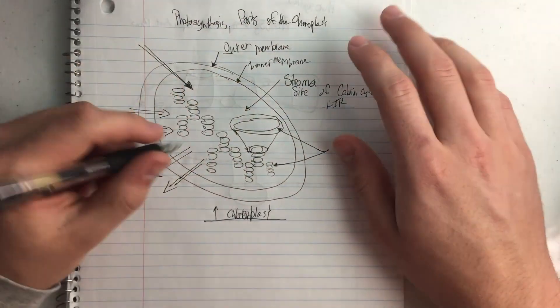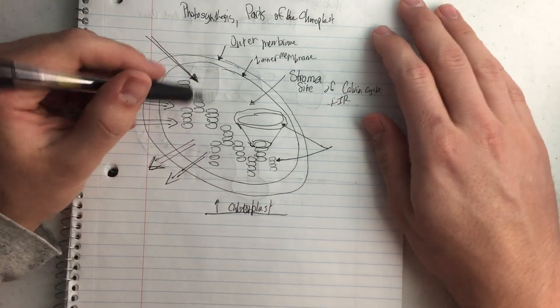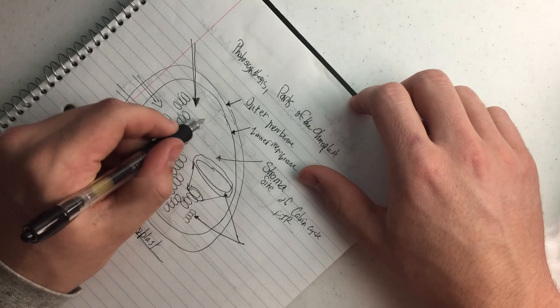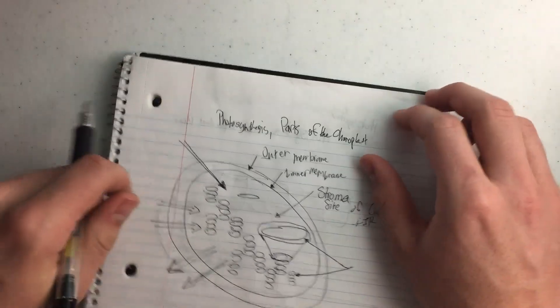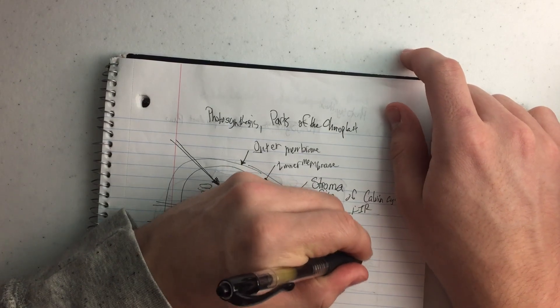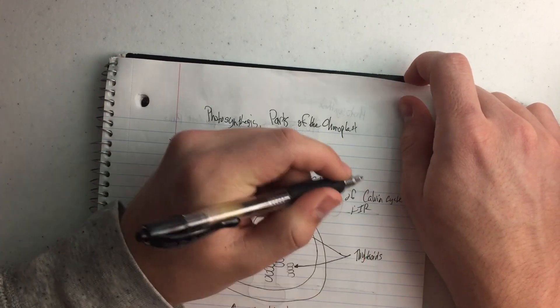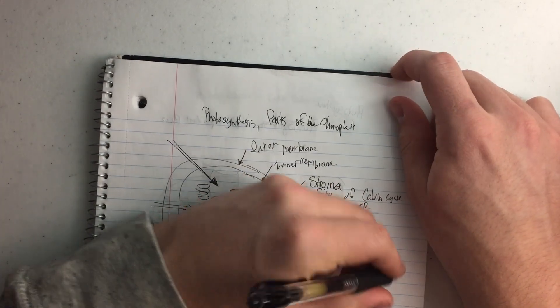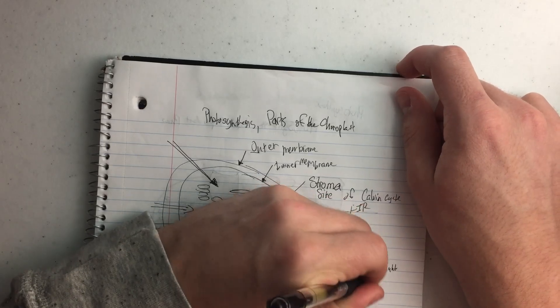And then we have the little, I think they look like skyscrapers with the little donut looking things that kind of look like ellipses, are called thylakoids. And this is the site of the light dependent reactions.